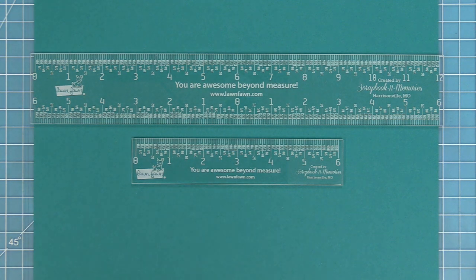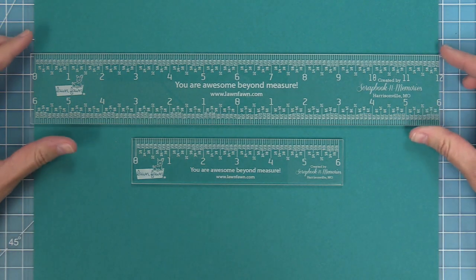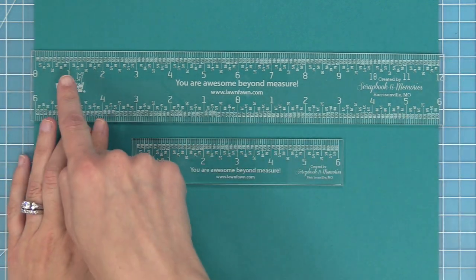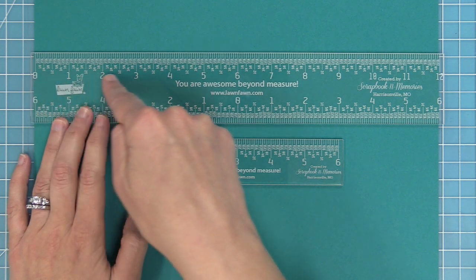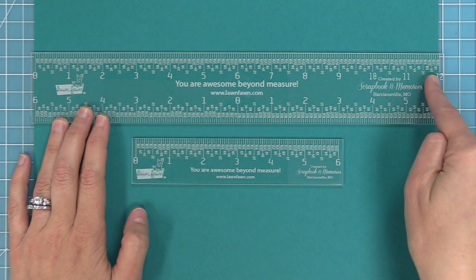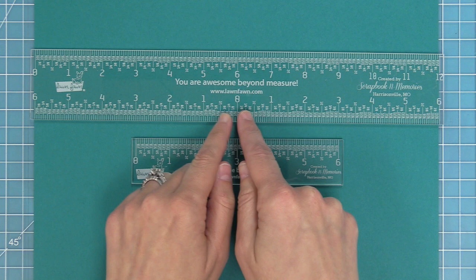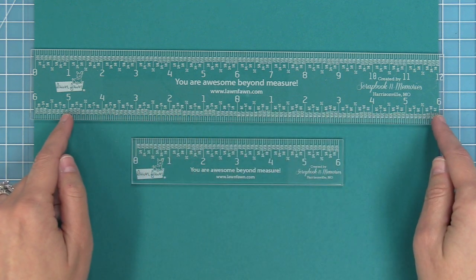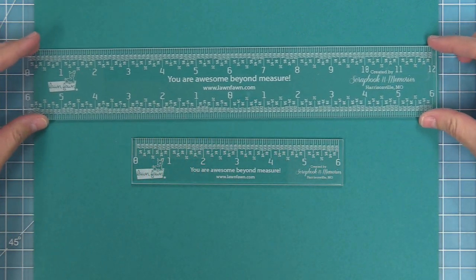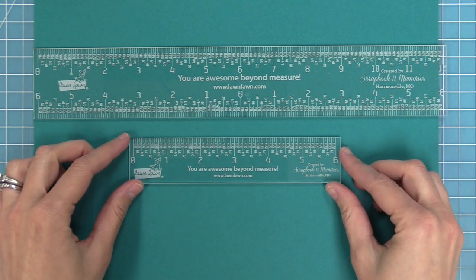On the 12 inch ruler, there are two different ways to measure. We have zero to 12 going at the top and then at the bottom we have the zero in the middle and that goes out from either side. So depending on how you're measuring on your card, both of them can be useful and I love having both options.